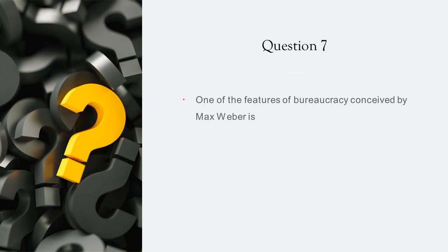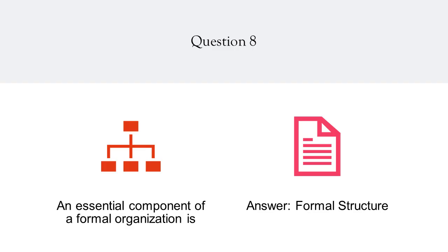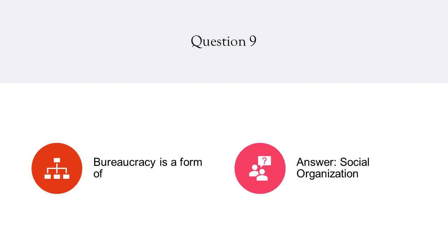One of the features of bureaucracy conceived by Max Weber is hierarchy. An essential component of a formal organization is formal structure. Bureaucracy is a form of social organization.